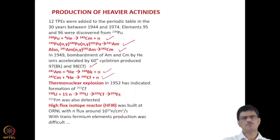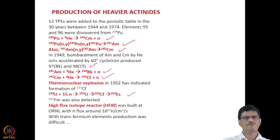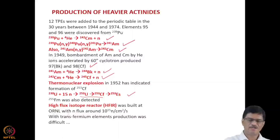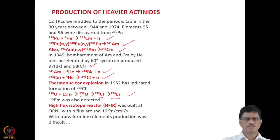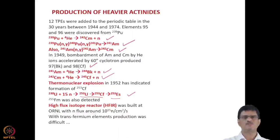In 1952, a thermonuclear explosion indicated the formation of Cf-253: large numbers of neutrons were captured by U-238 to give U-253, which decays to Cf-253, which subsequently decays to Es-253 (einsteinium). Fm-255 (fermium) was also detected in this thermonuclear explosion. Subsequently, ORNL's High Flux Isotope Reactor (HFIR) was built with a neutron flux of ~10¹⁵ neutrons/cm²/s, enabling synthesis of many heavier actinides. Trans-fermium elements, however, were not possible via this route and were subsequently produced through fusion-type nuclear reactions.